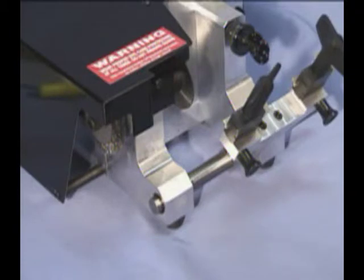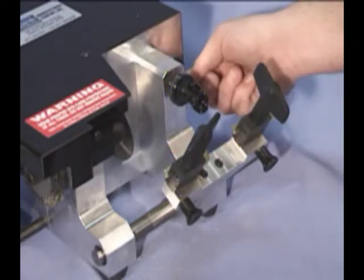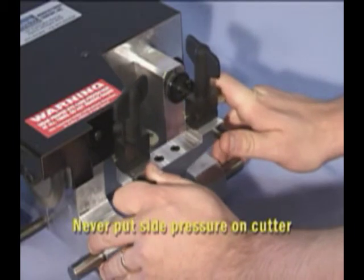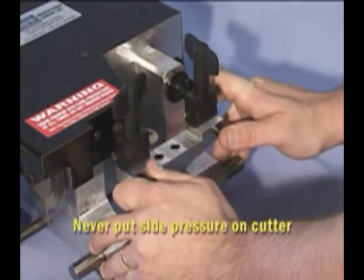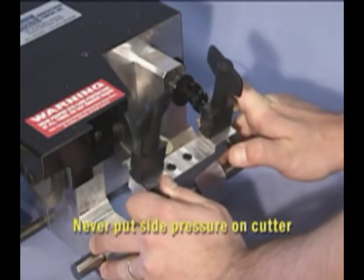It's time to cut the key. The DBM-1 uses a carbide cutter which makes straight-in cuts only. Never put side pressure on the cutter. Push the yoke forward and line up the throat cut with the guide. Push straight in to make the cut.